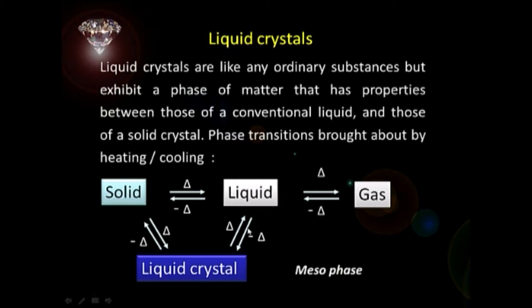We can follow the path again in the reverse direction: interconversion from solid to liquid crystal to liquid. And then cooling the material, it becomes a liquid crystalline phase in most cases, and then it becomes a solid. That is why these phases are called mesophases — intermediate phases.